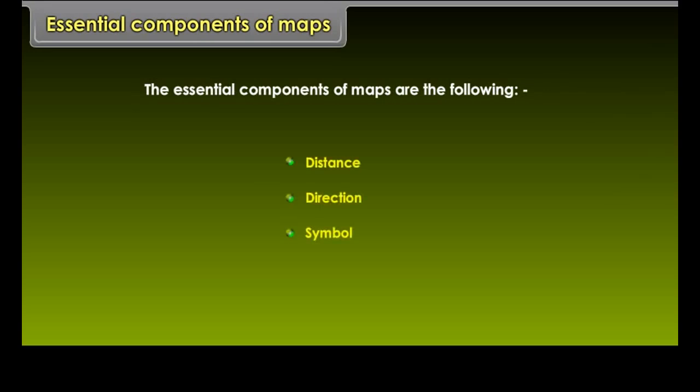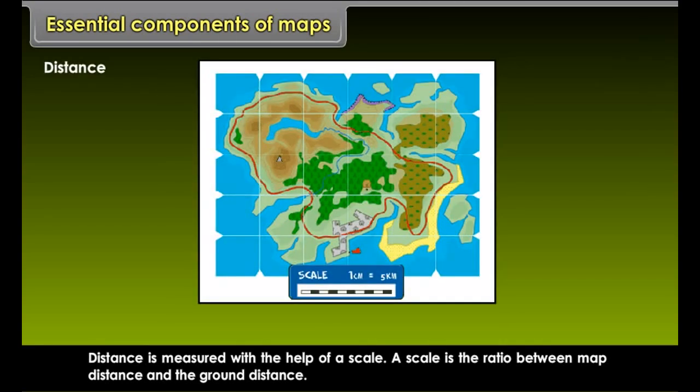Large Scale Maps. When small areas are shown on a large map, it is called Large Scale Map. These maps give detailed information. The map of Delhi, shown on a large sheet of paper, is a large scale map.